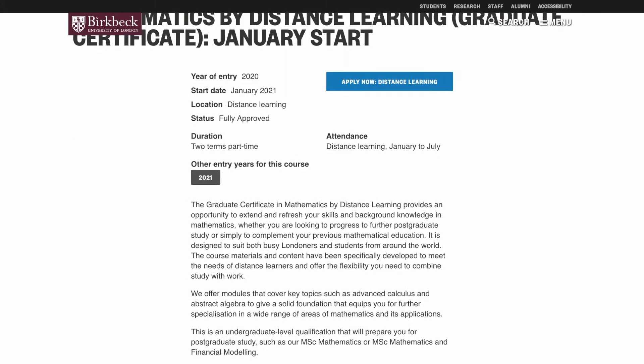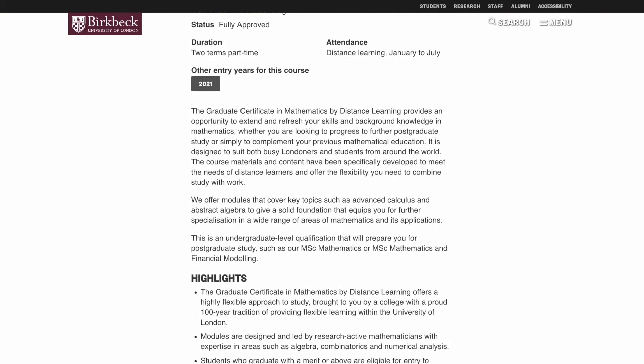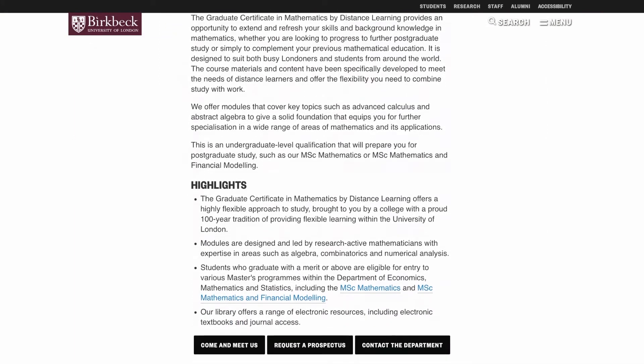The structure of the course is as follows. We can start in January or in October. If you start in January you will do 60 credits of taught courses over those two terms, the spring term and the summer term in the UK.